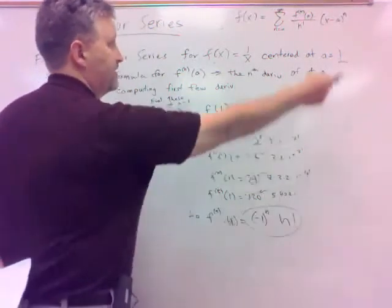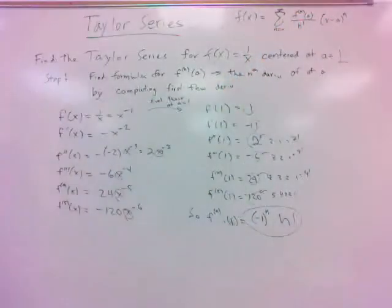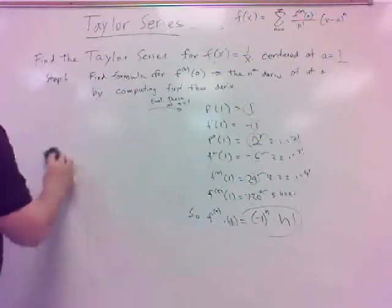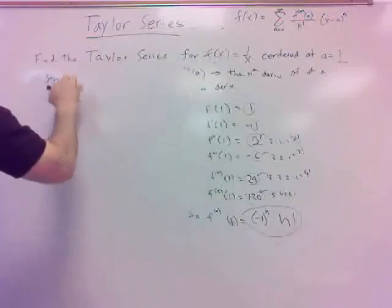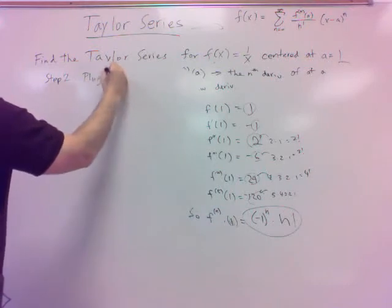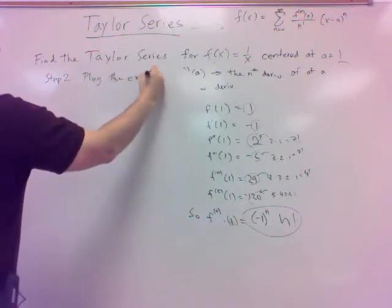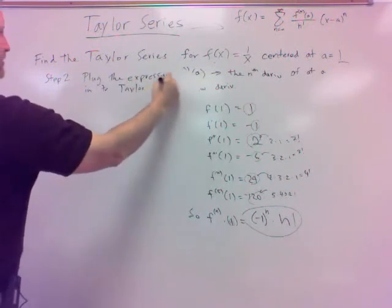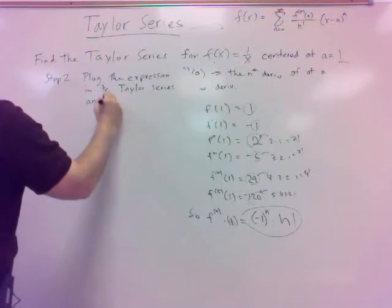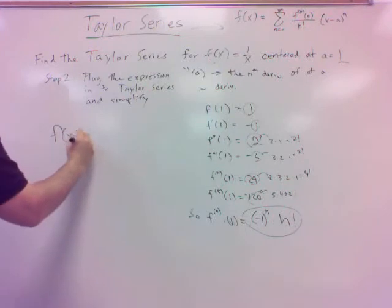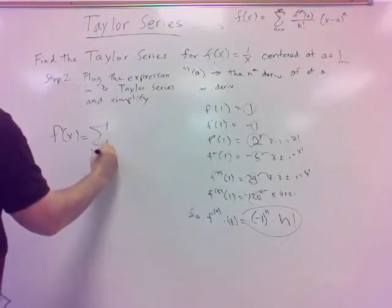So this is then what I'm going to plug into my Taylor series formula. The nth derivative at a, which in this case is 1, is negative 1 to the n times n factorial. Step 2 is to plug that expression into the Taylor series formula and simplify. So f of x — the Taylor series — is the sum from n equals 0 to infinity.